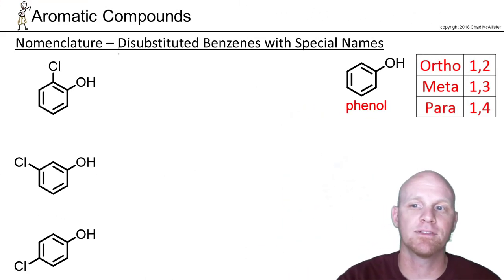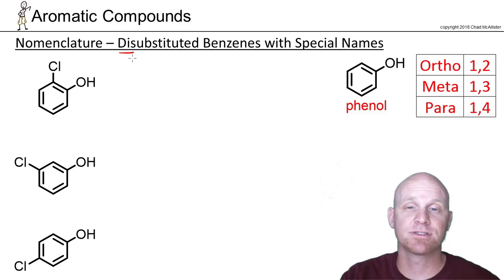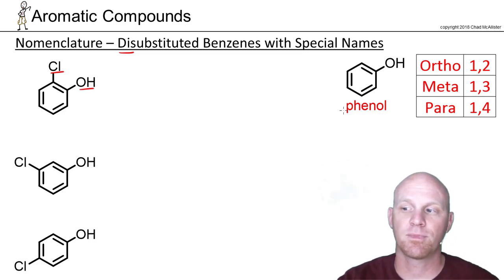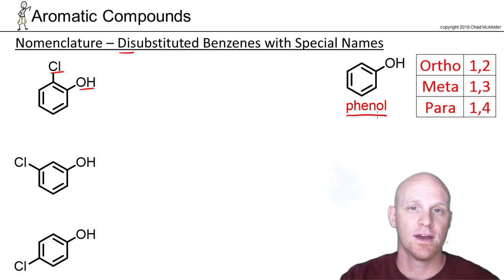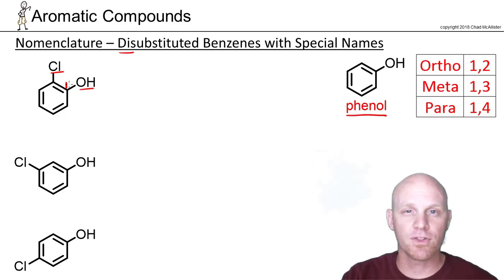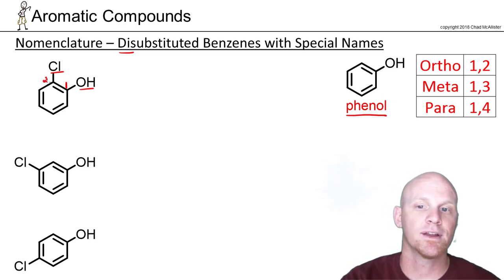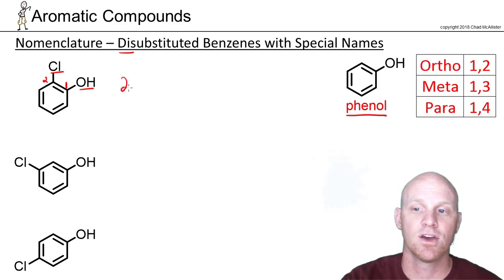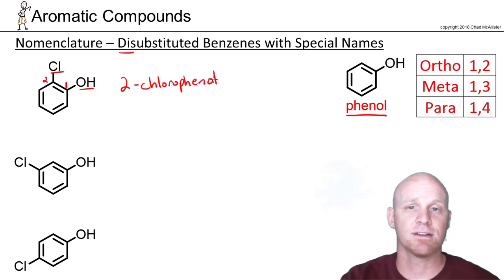Now let's look at disubstituted benzenes that use one of these special names. If we have a chlorine and a hydroxyl group, the hydroxyl gives us phenol as the parent chain — and calling it phenol automatically implies the OH is at position one, putting the chlorine at position two. So we name the chloro as a substituent: 2-chlorophenol.